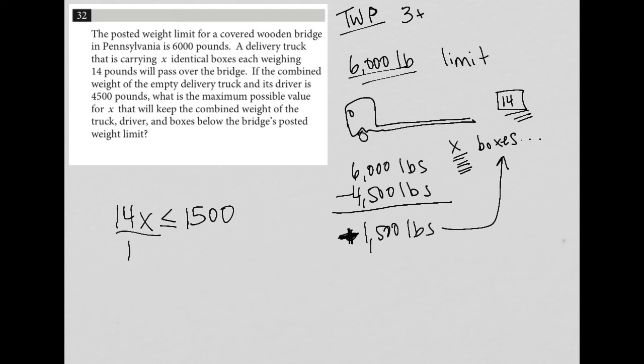When I do the math on that, I can divide both sides by 14, and then in my calculator, I can take 1,500 divide it by 14. What I get here is that X has to be less than or equal to 107.14.